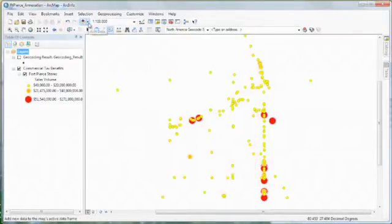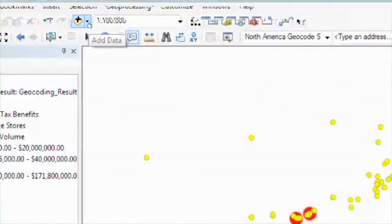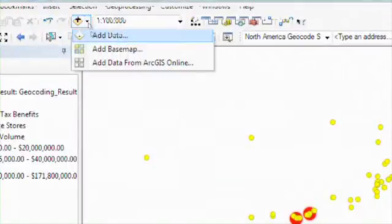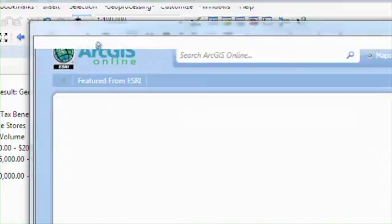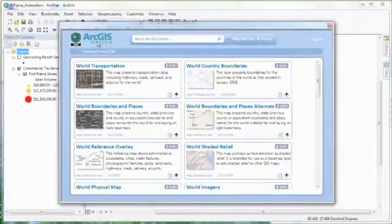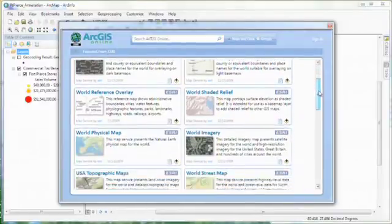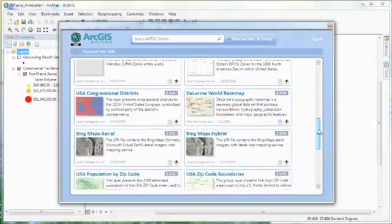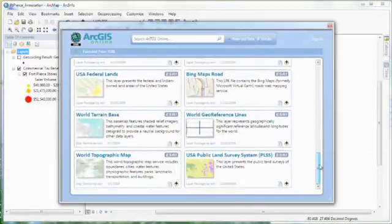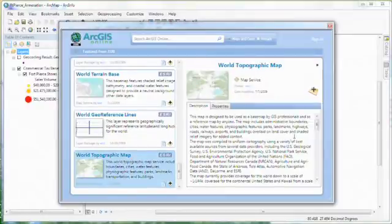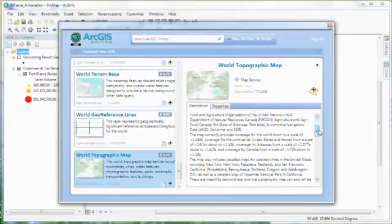Since online content is easily accessible from ArcMap, I can quickly search by keyword or browse featured content. Notice that there are a variety of base maps to choose from, as well as other content layers, such as demographics and congressional districts. Each map has detailed information about who published the map and how recently it was updated, giving me a level of confidence in the map that I'm building.